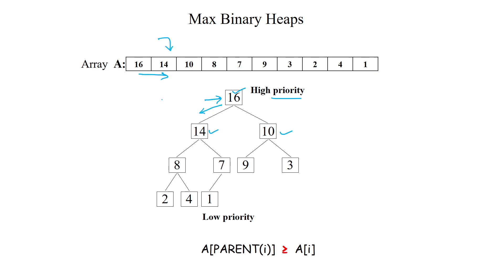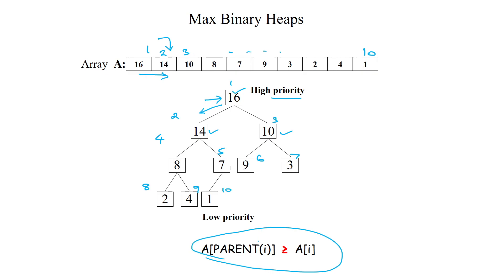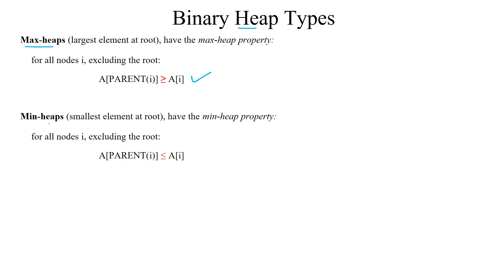In the array view, the node indices are 1, 2, 3, 4, 5, 6, 7, 8, 9, and 10. When arranging nodes in the form of a table, they are stored at these indices. The max heap always maintains the heap property: the parent value is always greater than its children.